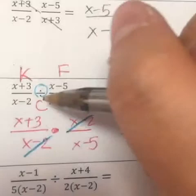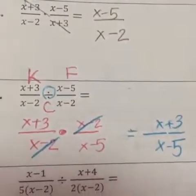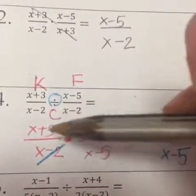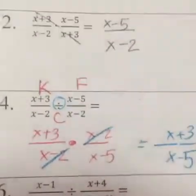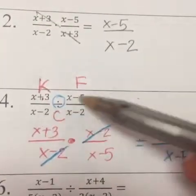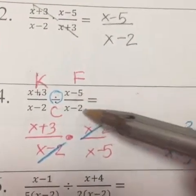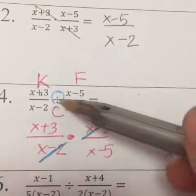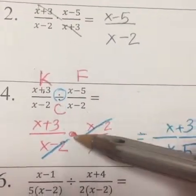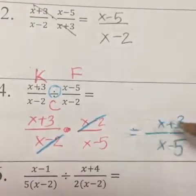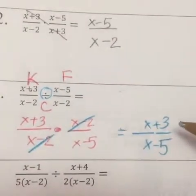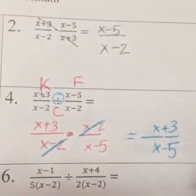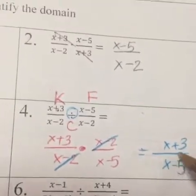So to divide rational expressions or fractions, we use KFC: keep the first fraction, flip the second fraction, change the sign to multiplication, and then simplify. That gives us our final answer.